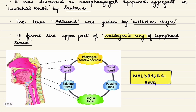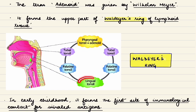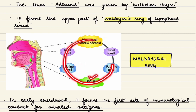Waldeyer's ring is the ring of lymphoid tissue located at the nasopharynx and oropharynx, at the entrance of the upper aerodigestive tract. It consists of superiorly the pharyngeal tonsil (adenoids), inferiorly the lingual tonsils, and laterally the tubal tonsil around the eustachian tube area, and the palatine tonsils.